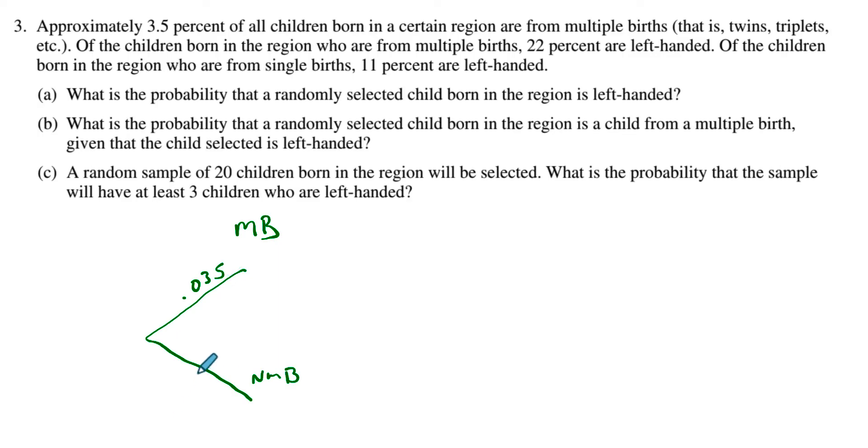That leaves 0.965 because they have to add up to one, right? So it's either one or the other. Subtract from one, you'll get this value here. Then it says, of the children who are born from multiple births, 22%, so 22% are left-handed. And that means that, I'm going to assume that means the rest of them are right-handed. So we'll call that 0.78.